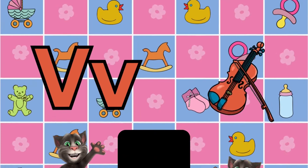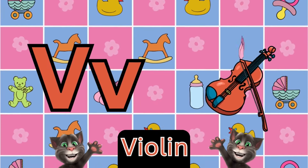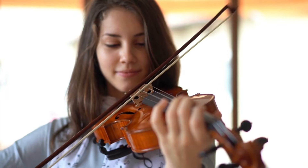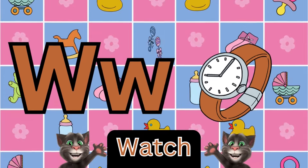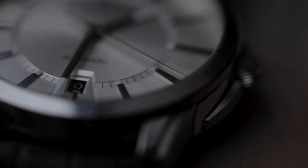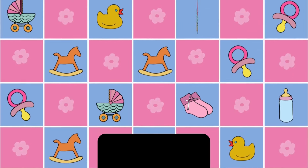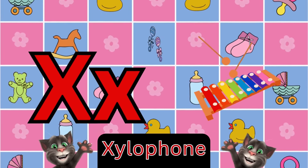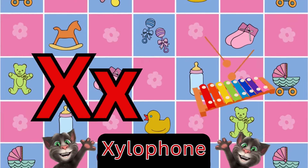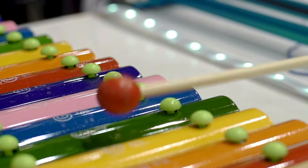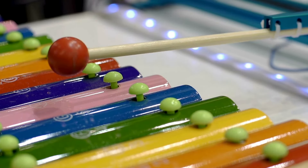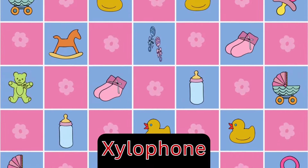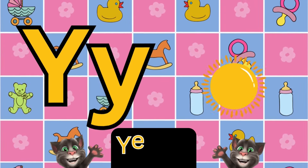K is for kangaroo. K, k, kangaroo. L is for lion. L, l, lion. M is for mat. M, m, mat. N is for net. N, n, net.